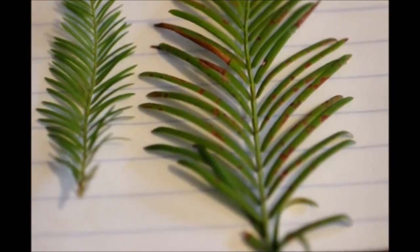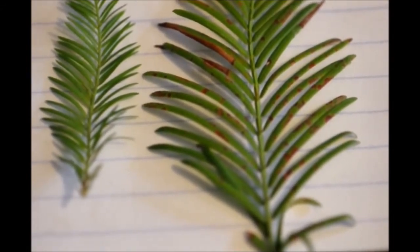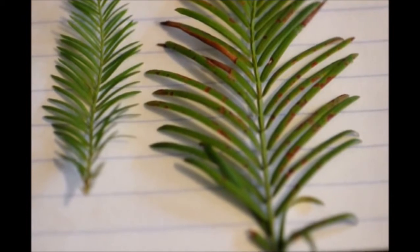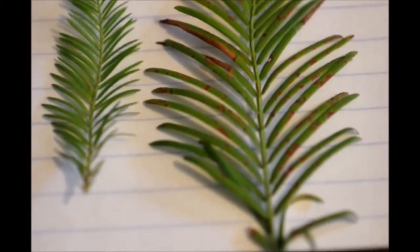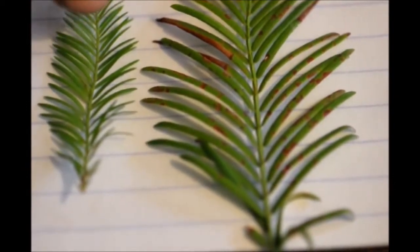If you ever see a plant and you're not quite sure whether it's bald cypress or dawn redwood, take a look at the leaflets and how they're arranged. If they are opposite of one another, it must be dawn redwood. If they alternate back and forth, it must be bald cypress.